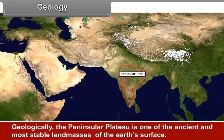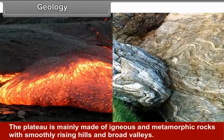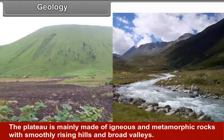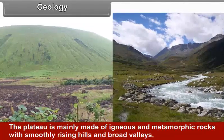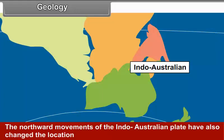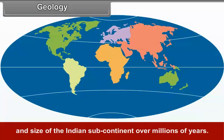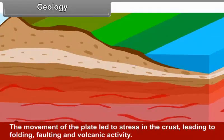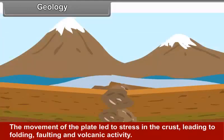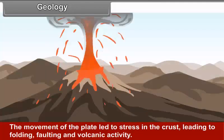This is a young and unstable zone with high peaks, deep valleys and swift-flowing rivers. In due course of time, the depression between the uplifted young Himalayas and the old Peninsular Plateau gradually filled with sediments deposited by rivers flowing from the Himalayas in the north and the Peninsular Plateau in the south. Extensive alluvial deposits led to the formation of the northern plains of India.